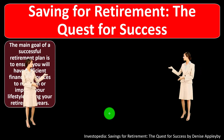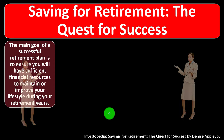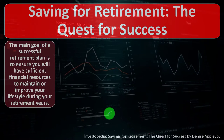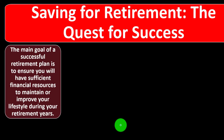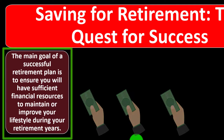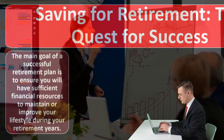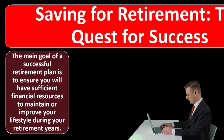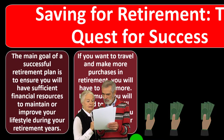As we think about the specific goal of retirement, we want to keep in mind the tools covered in prior sections — overall investment strategies using stocks, bonds, and mutual funds. We're going to apply those tools to the specific goal and objective that pretty much every individual has: saving for retirement. The main goal of a successful retirement plan is to ensure you will have sufficient financial resources to maintain or improve your lifestyle during your retirement years.